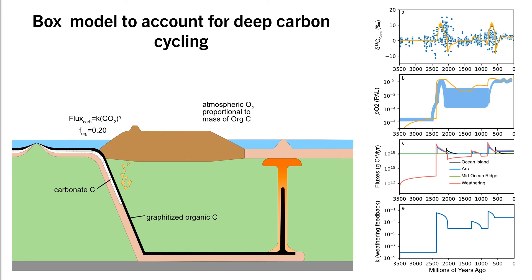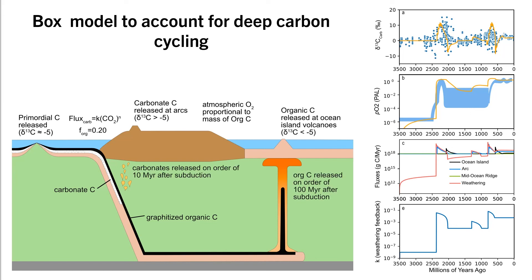CO2 released at mid-ocean ridges is always minus 5 per mil, and CO2 released at arcs is heavily influenced by the delta-13C of subducted carbonates, while the delta-13C of CO2 released at ocean island volcanoes is heavily influenced by subducted organic carbon. Carbonates are recycled on the order of tens of millions of years, while organic carbon is released on the order of hundreds of millions of years.